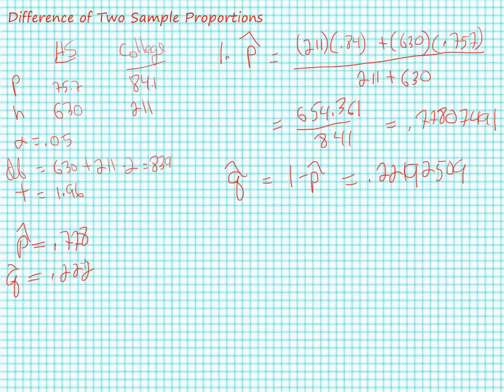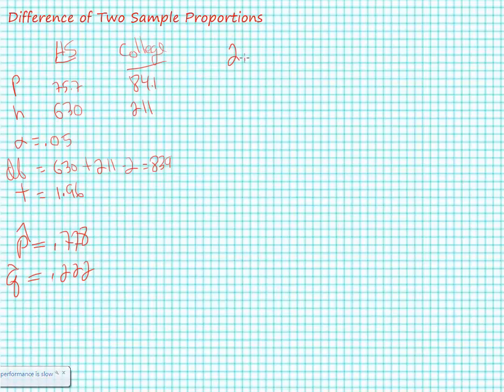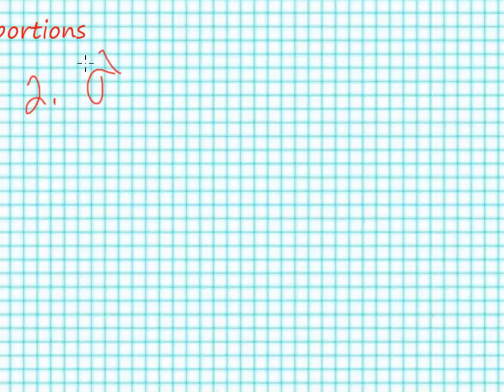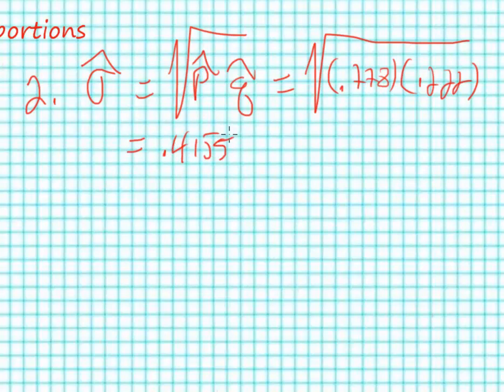Now we move on to step number two. Step number two: we need to solve or estimate this value, which is equal to this quantity. Based on what we did in step number one, we know this is going to be 0.778 times 0.222, and we'll take the square root of all of that, and we'll get a value of approximately 0.41554103.